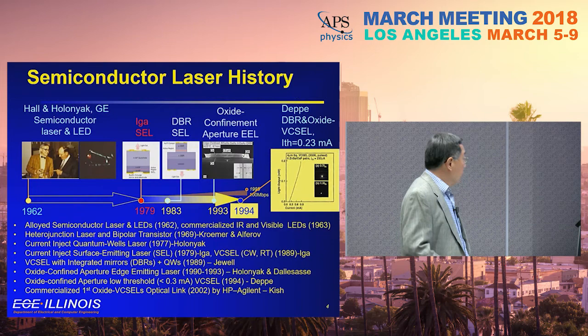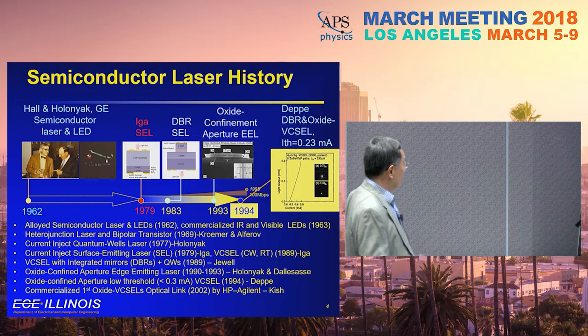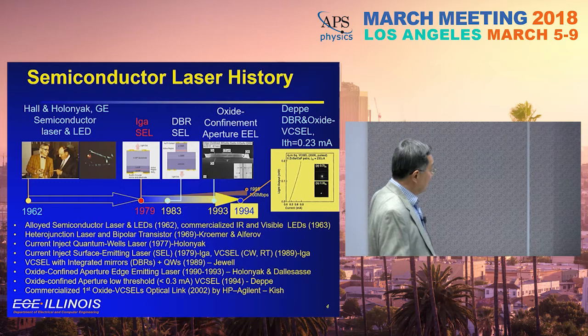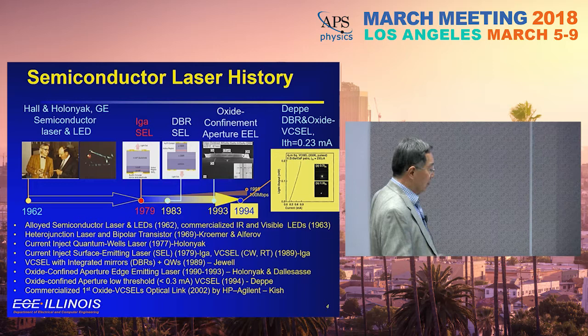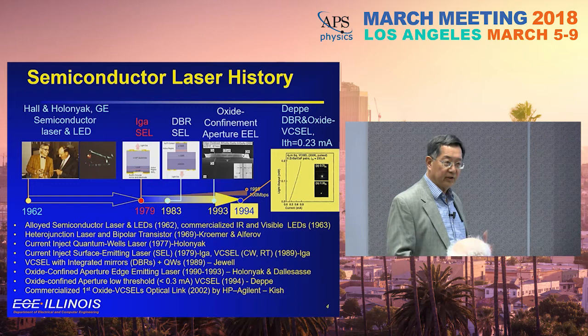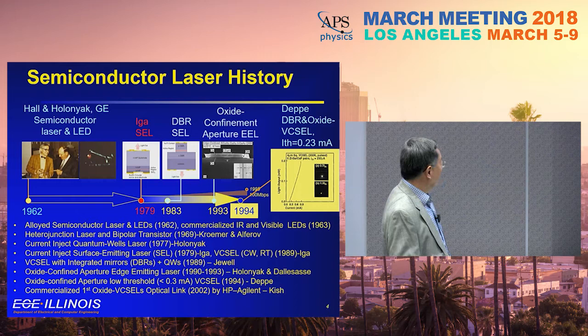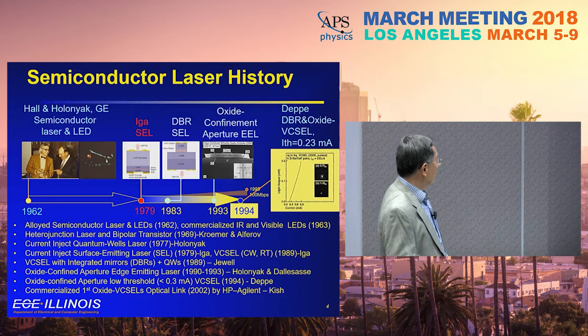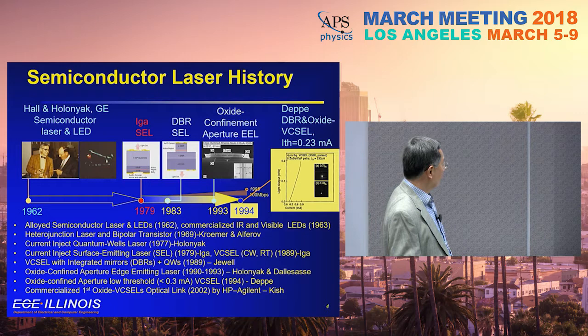1962 was a major breakthrough for the semiconductor laser and LED, beginning visibility in LED devices. Commercialization happened very quickly, a year later—it was expensive, but the first use was in the HP calculator at $400 a piece; now it's about two dollars. The second major breakthrough was the 1969 Herbert Kroemer HBT, and today every cell phone uses HBT for the power amplifier. Then came the quantum well laser demonstrated in 1977, and in 1979 the surface-emitting laser was first discovered by Iga, with CW operation demonstrated in 1989.